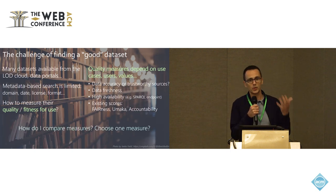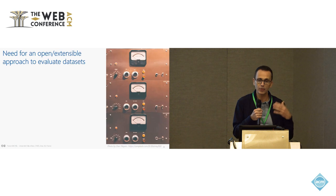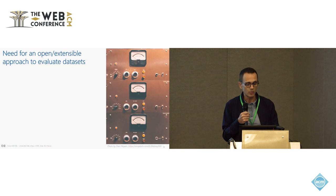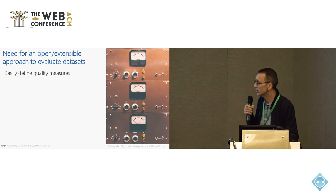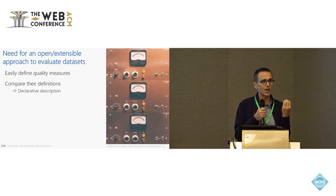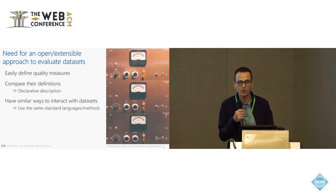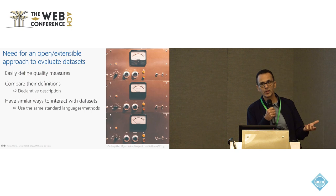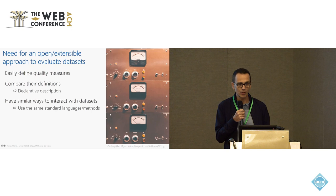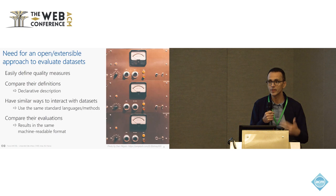Besides, how do I compare those measures and how do I choose one of them? What we would need in the end is really an approach that allows for the evaluation of different dataset quality metrics in an open and extensible manner. I would need a way to easily define new quality measures, compare their definitions and the methods behind them — which calls for a declarative description of the quality measure — interact with datasets in the same way, and eventually compare the results.